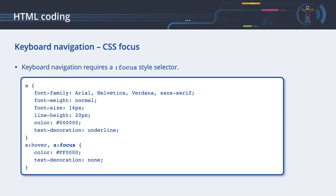Keyboard navigation and CSS focus. Developers often highlight their links when moving the mouse pointer over them by using the :hover style selector. This makes it easier to detect links. The same is valid for keyboard navigation. However, as keyboard navigation does not use a mouse, a :hover style selector is not triggered. Keyboard navigation requires a :focus style selector. Use both style selectors to cover the two application scenarios.